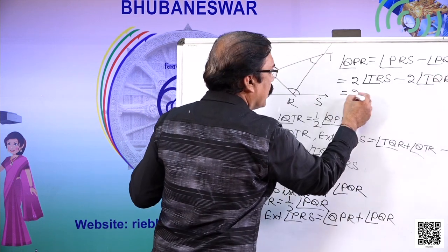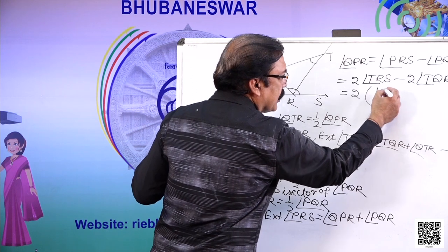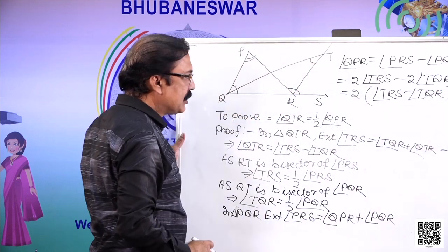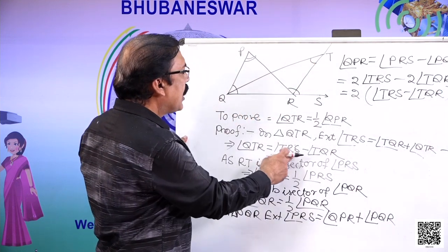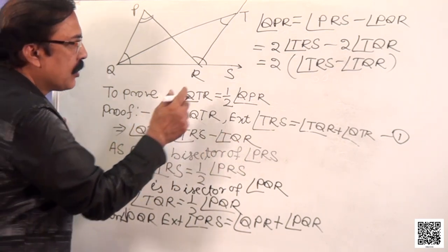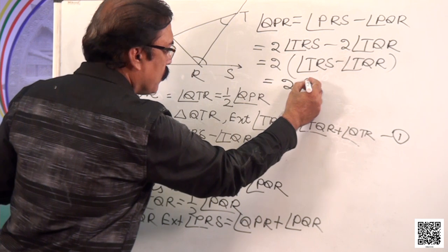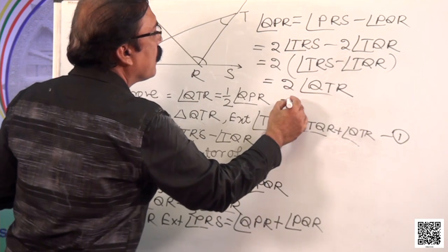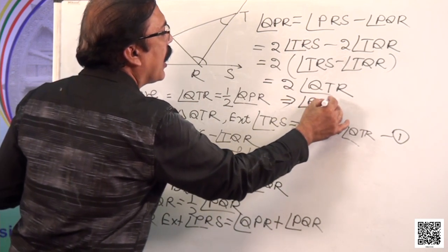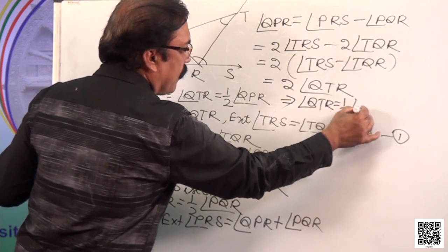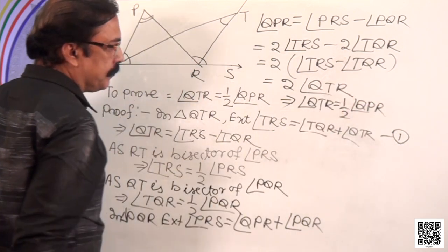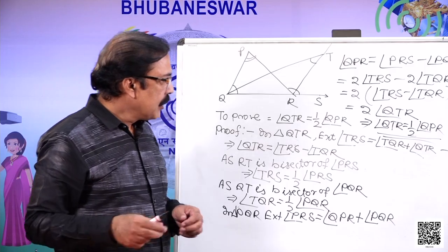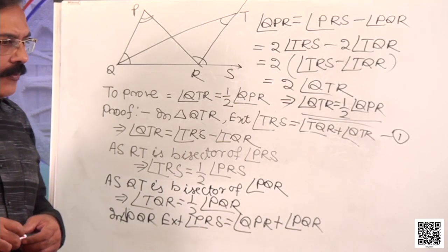Taking out the factor of 2, we have angle QPR equals 2 times (angle TRS minus angle TQR). Now, TRS minus TQR is angle QTR. So we can write angle QPR equals 2 times angle QTR. From this relationship, we can say that angle QTR is equal to half of angle QPR. This was to prove, and we proved it.